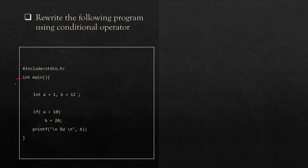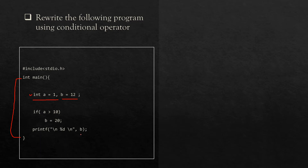You can see here we have a main function, and inside it we have two variables: a equals 1 and b equals 12 — both are integer variables. We have an if-condition that if the value of variable a is greater than 10, then assign the value of b with value 20, then print out the value of variable b.